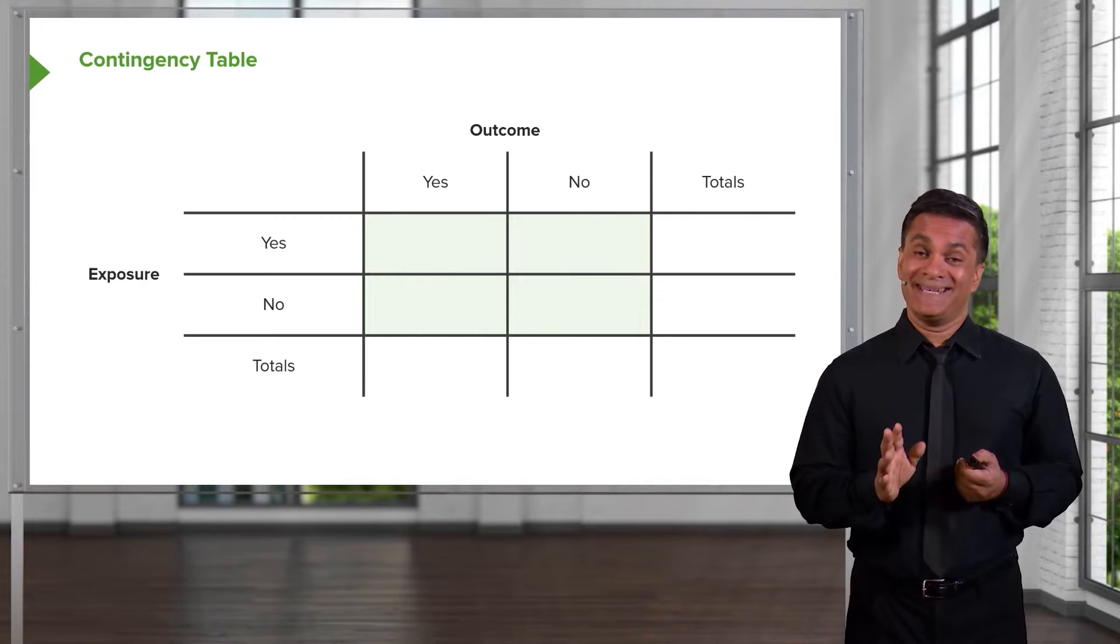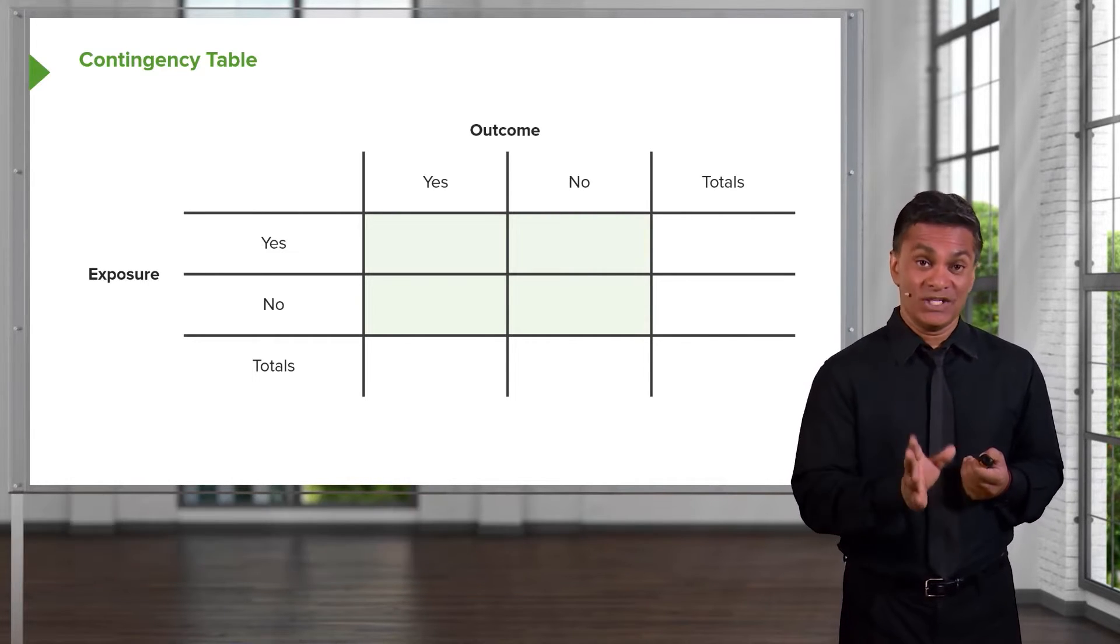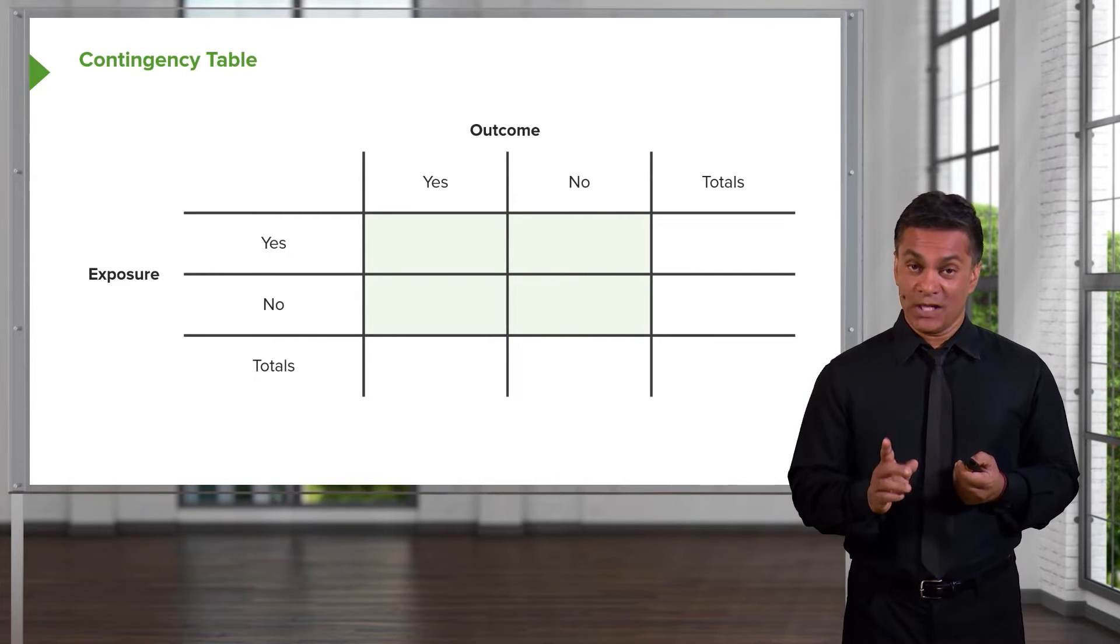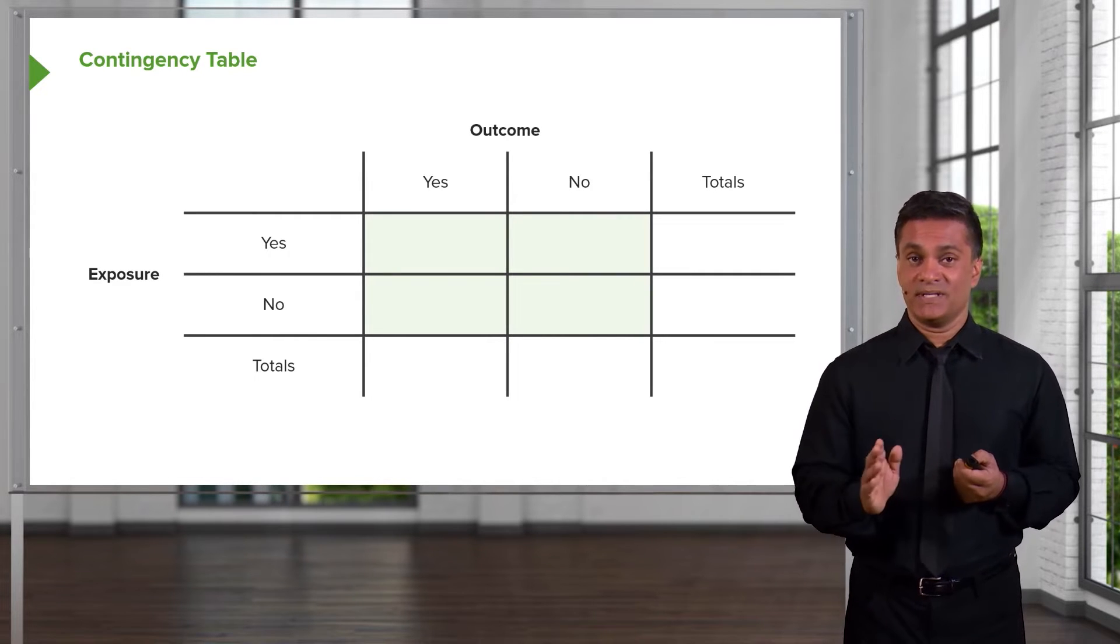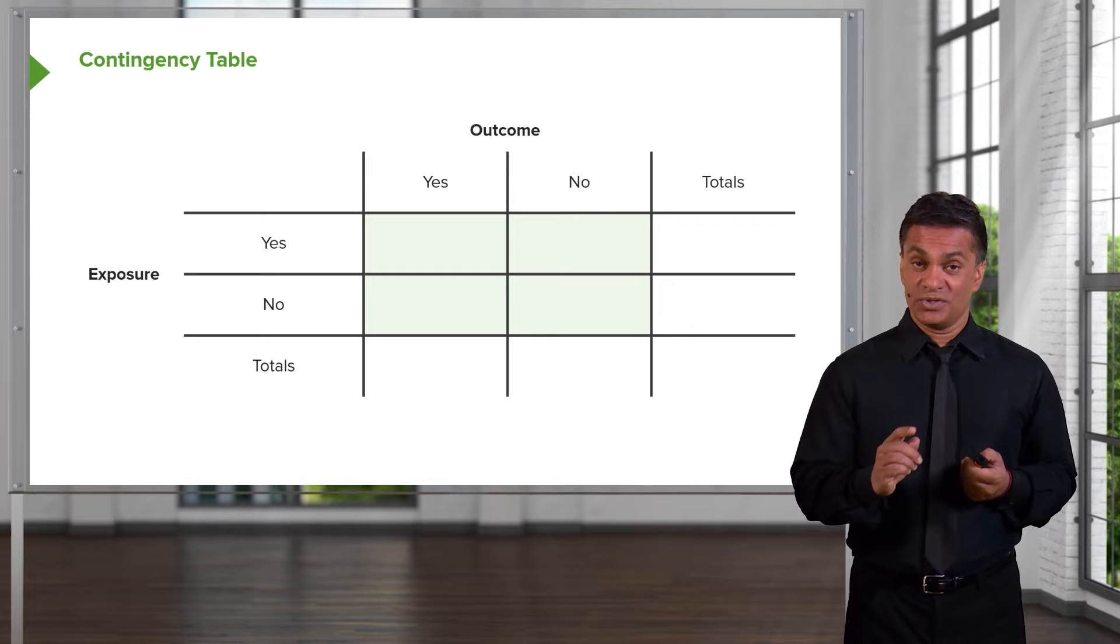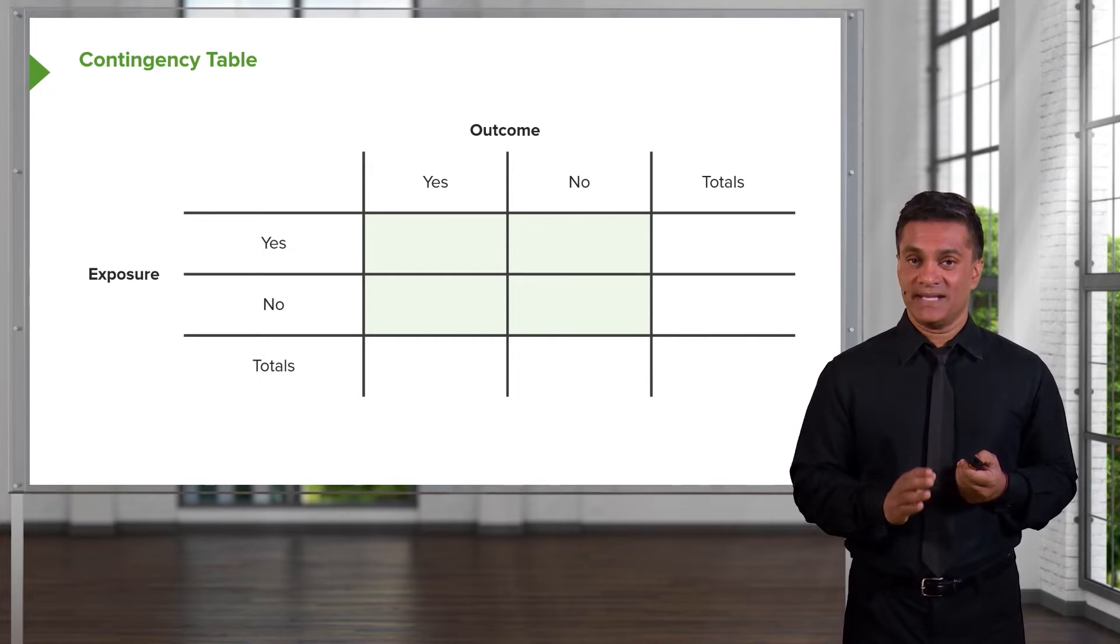In order to do this, we need to set up what's called a contingency table. We call it a contingency table because the outcome is contingent upon whether or not you get the exposure. Pay close attention because the way you set up this table will determine whether or not the formulas that I show you will actually work. It's important to do it this way, where the exposure status is on the horizontal levels of the table and the outcome status is the vertical components of the table.